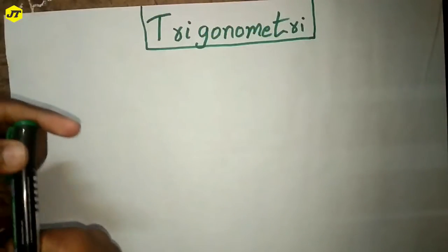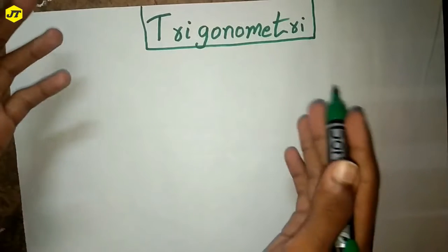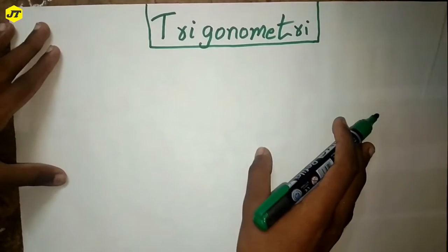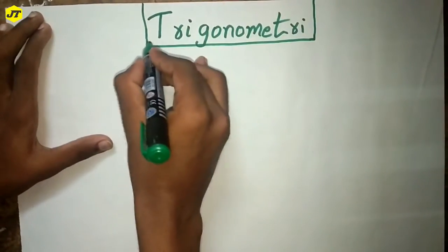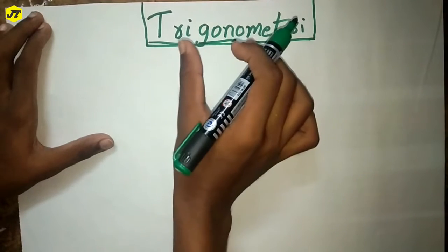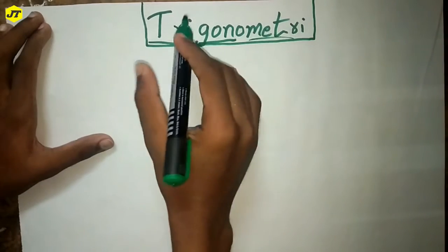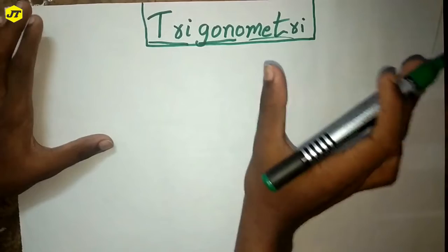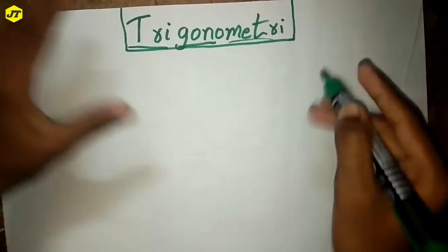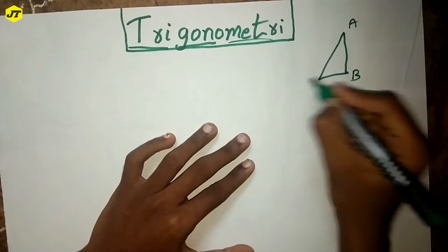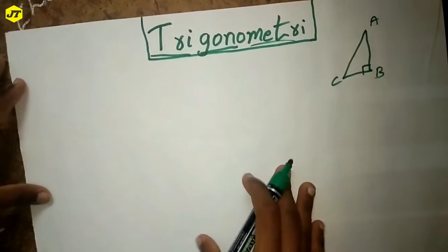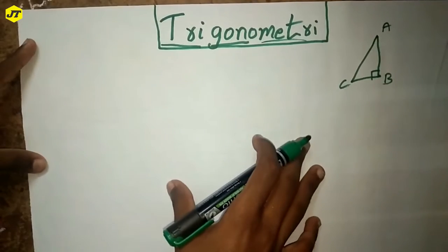Hi guys, in this video I will explain the trigonometry basic view — that means why we can do trigonometry full chapter with these simplified basics. So don't skip the video, see the video completely. Trigonometry means three angle measurement. Trigonometry is based upon a right angled triangle. The main ratios of trigonometry are: